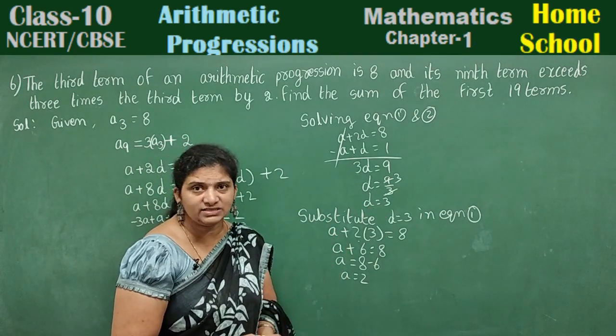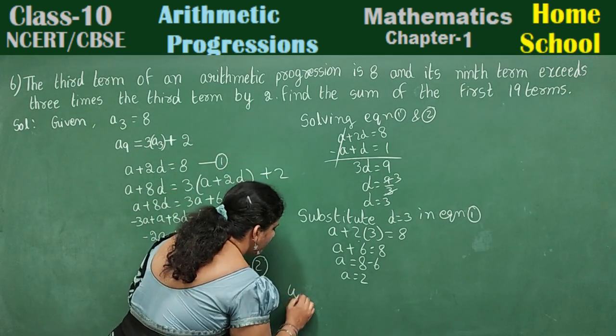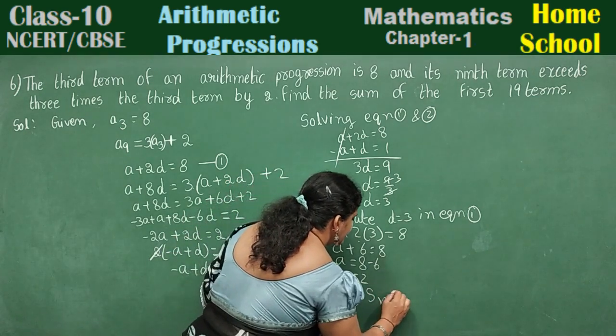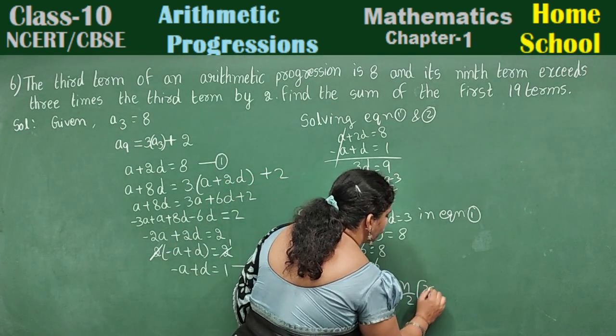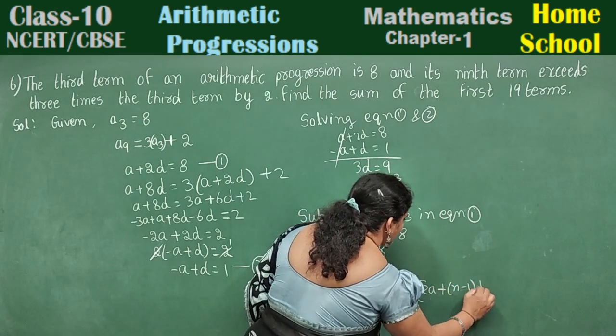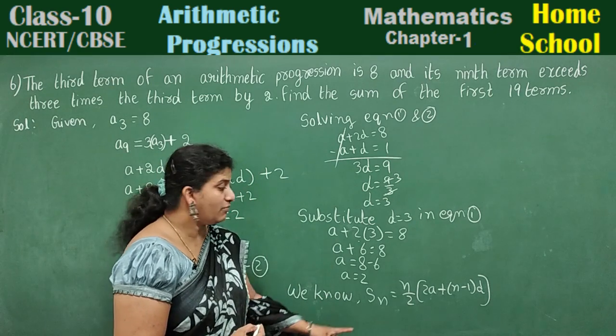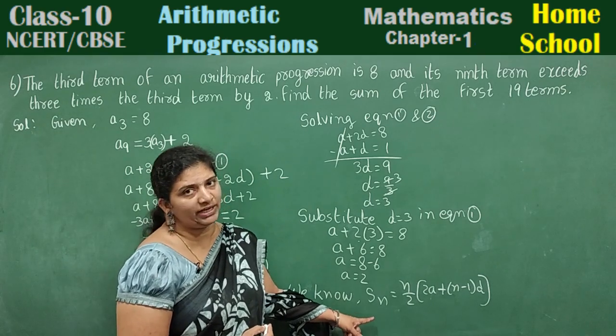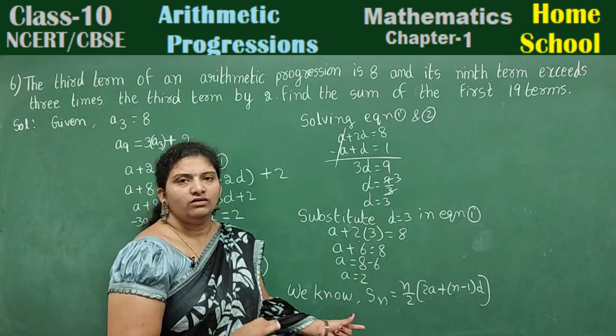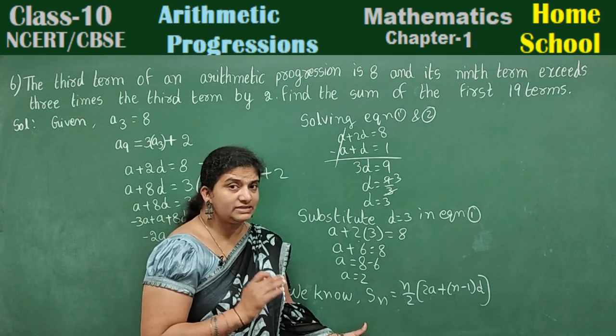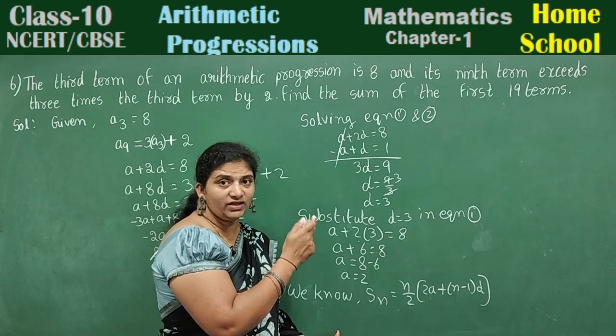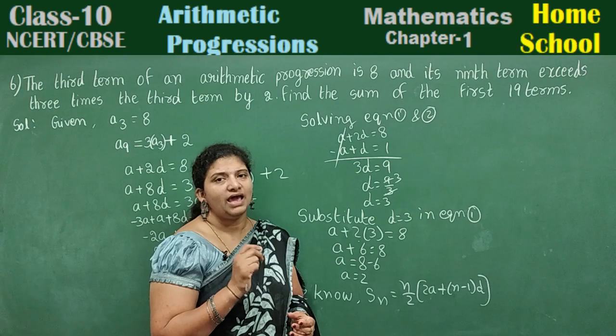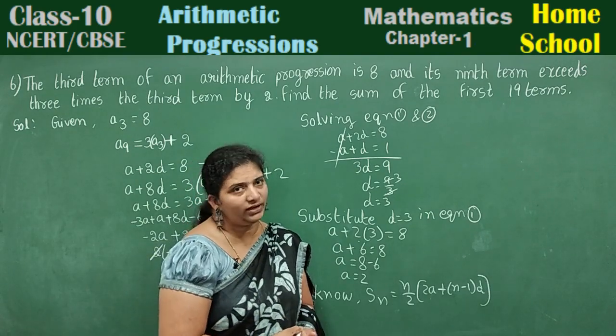Now let us find out sum of first 19 terms. We know the formula. Sn is equal to n by 2 into 2A plus n minus 1 into D. Sum of the terms, how will you calculate? By using this formula. Sn means sum of n terms. But they have given the n value. What is the n value? 19. Sum of 19 terms means n is equal to 19. S19 we need to calculate.